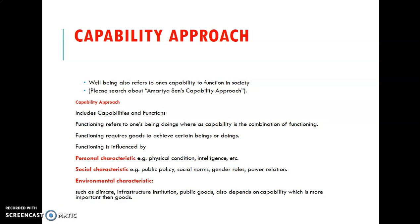Social characteristics include public policy provided by the government, and social norms must also be monitored by the government. Social gender roles and gender equality are important — both women and men should be provided with job opportunities on an equal basis. Environmental characteristics such as climate, infrastructure, institutions, and public goods also depend on capability, and these are provided by the government.